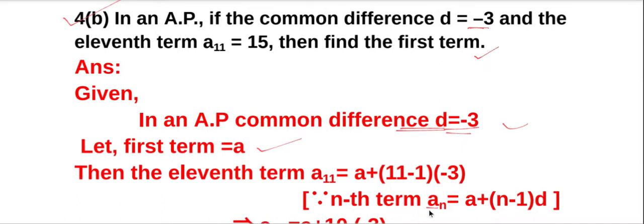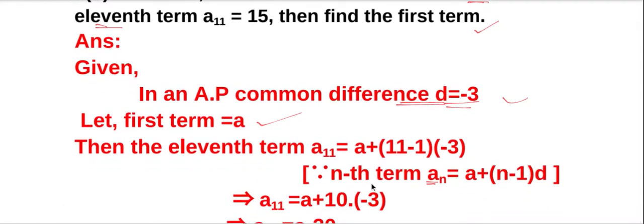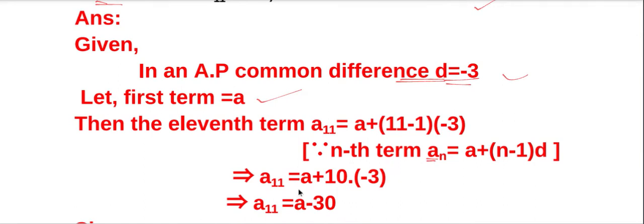The nth term formula is: aₙ = a + (n − 1) × d. Here, n equals 11, so a₁₁ equals a plus (11 minus 1) into the common difference, which is minus 3.